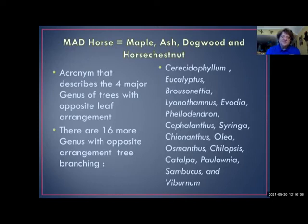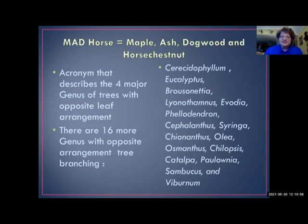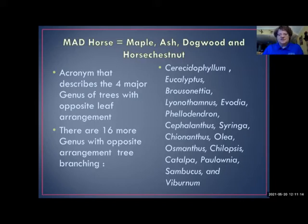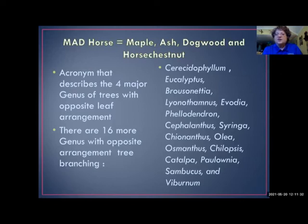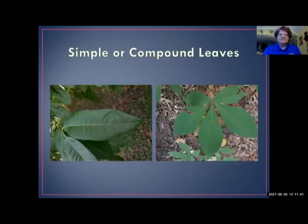MAD Horse is an acronym for maple, ash, dogwood, and horse chestnut — those always have opposite leaves. There are 16 more genera with opposite leaves, but very few are found in our area; many are tropical. The Cercidiphyllum, the Japanese katsura tree, is one we do have here, and we also have some Chionanthus. But out in the woods you're most likely to come across maple, ash, dogwood, or horse chestnut. If you know it's none of those four, you most likely have an alternate leaf pattern.